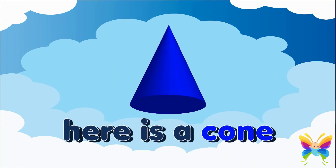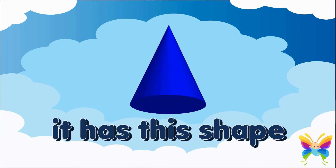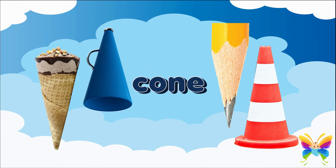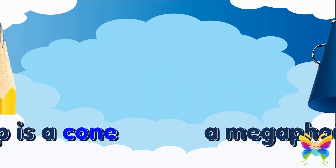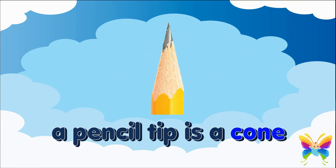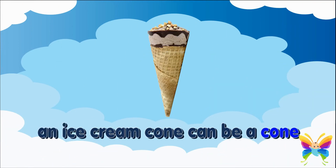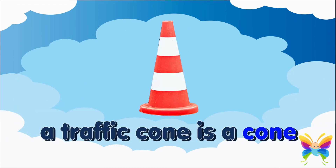Here is a cone — it has this shape. These are things that have the shape of a cone — you can see them every place. A megaphone is a cone, a pencil tip is a cone, an ice cream cone can be a cone, a traffic cone is a cone.